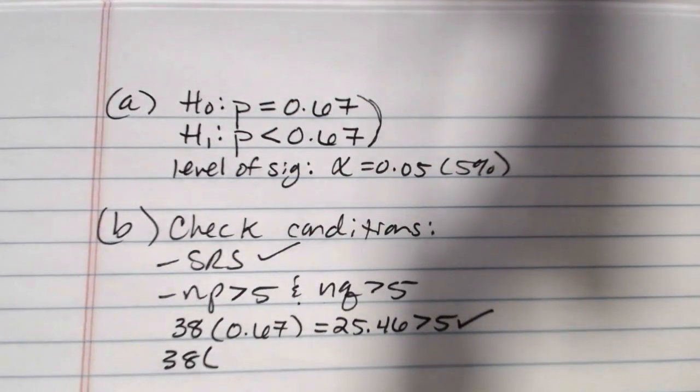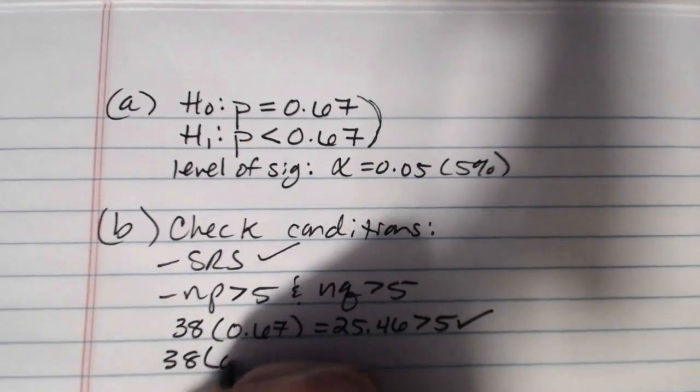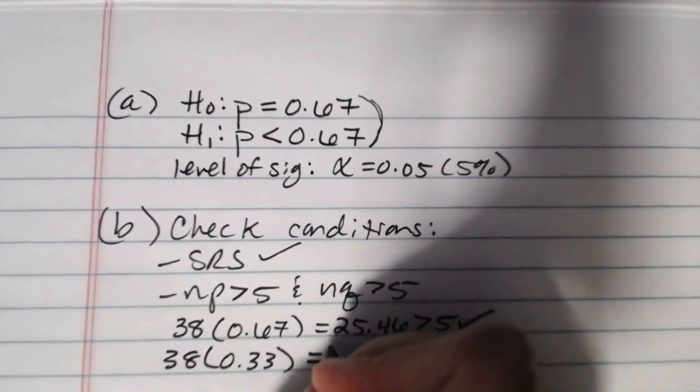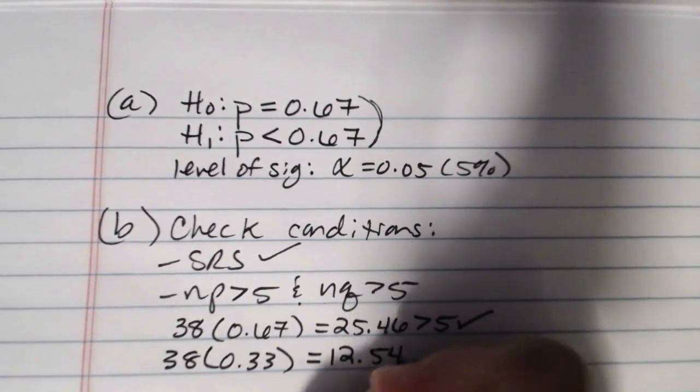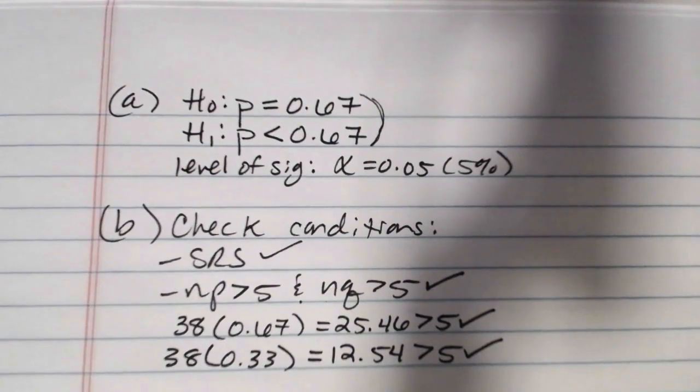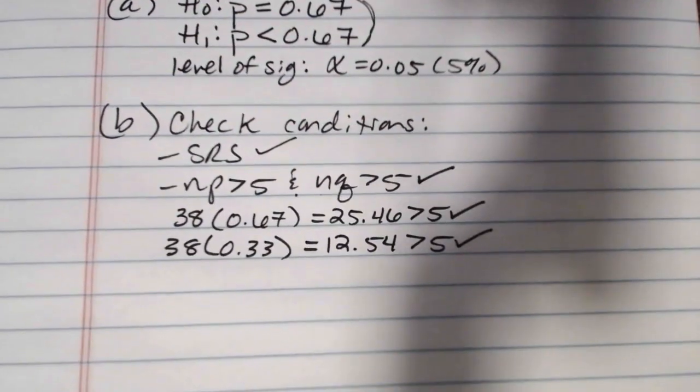I also then need to check NQ, and if P is 0.67, then Q is 0.33. So we take 0.33 times 38, we get 12.54. That's also greater than 5. So that condition is met. We have a simple random sample, we have NP and NQ greater than 5, so we know that it's okay to go ahead and proceed with the rest of the hypothesis test.